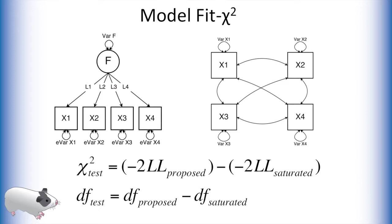However, the chi-square statistic has its limitations. Many believe it to be overly stringent. The chi-square statistic is also sensitive to large sample sizes and will almost always be significant given upwards of 300 observations. So researchers developed other methods of assessing model fit.